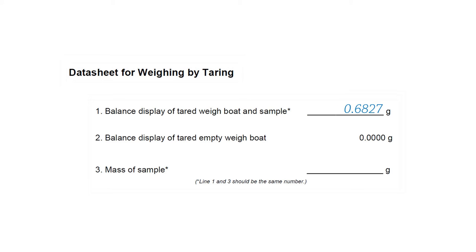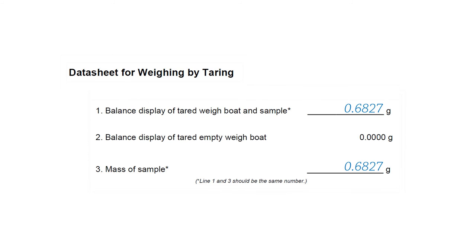Item 1 is the balance display of the tared weigh boat and sample. It is what we weighed, 0.6827 grams. Subtract item 2 from item 1 to give item 3. This is the mass of the sample, which is 0.6827 grams.